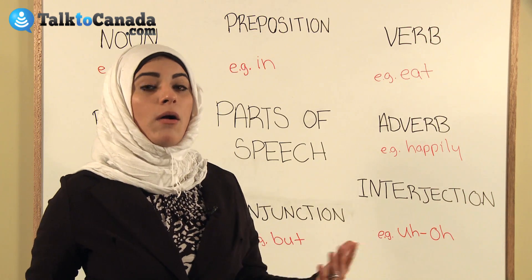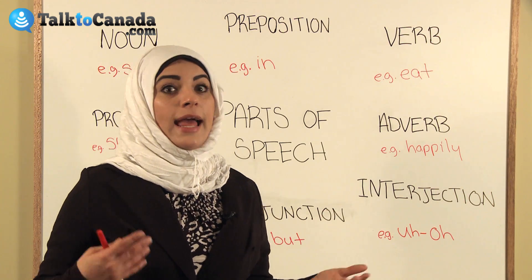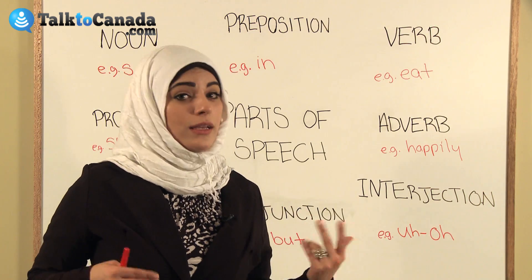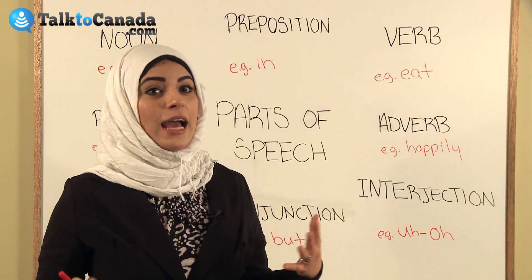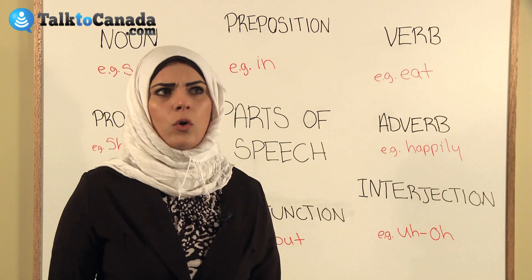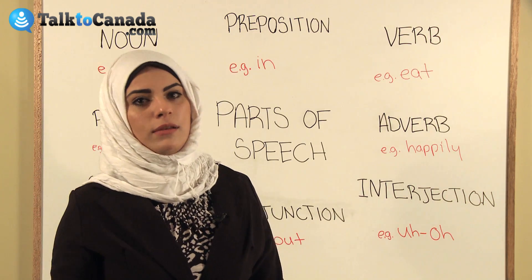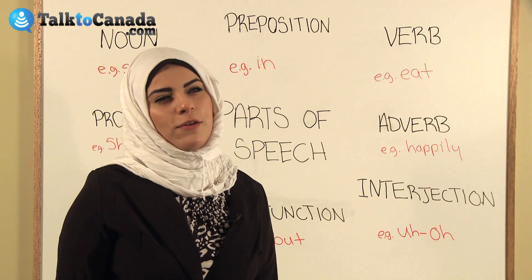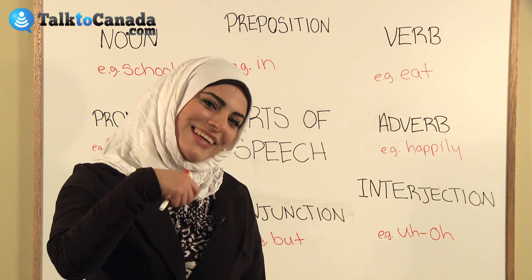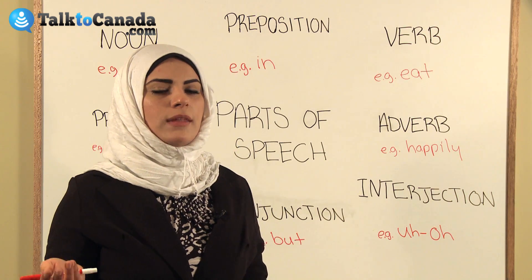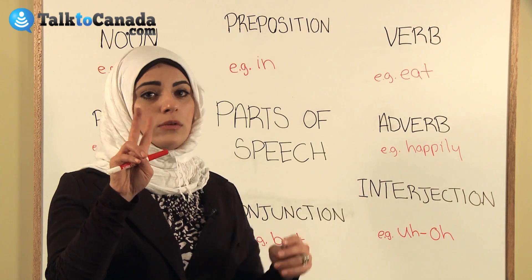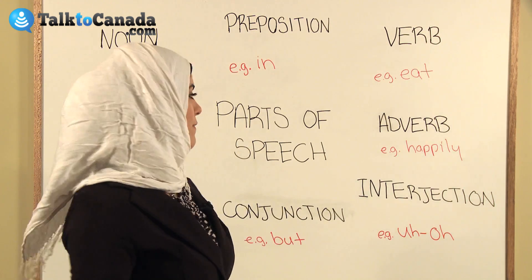An adverb is a word that modifies a verb, an adjective, and it can actually also modify another adverb. It can show the extent of something, so an adverb does a lot of things. Examples of adverbs are happily, quickly, sometimes, often, never. I'll give you a sentence: Emily often eats her vegetables happily. There are two adverbs — often and happily.